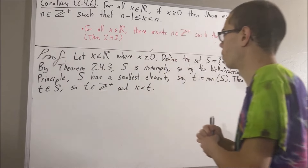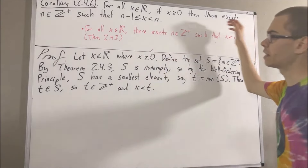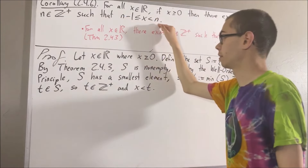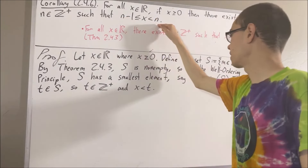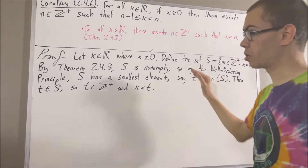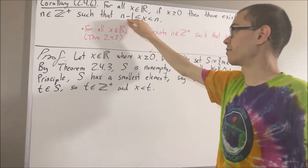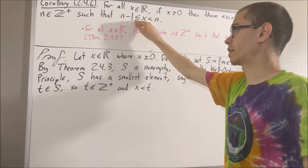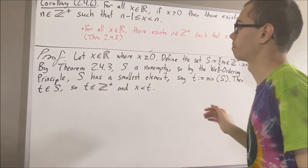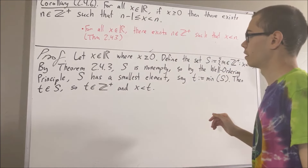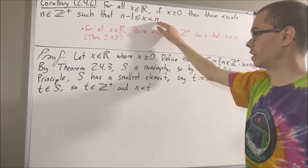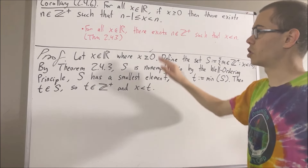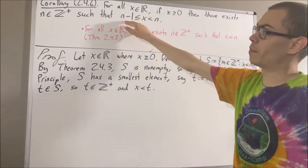Now, remember, our goal is to find a positive integer which satisfies the inequality n minus 1 is less than or equal to x, which is less than n. Our claim is that T is a positive integer that satisfies this inequality. So we're going to show that T minus 1 is less than or equal to x, which is less than T. We already know that x is less than T, so all that's left to show is that x is greater than or equal to T minus 1.